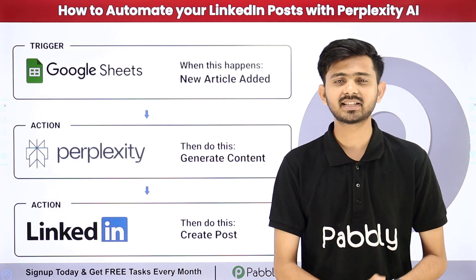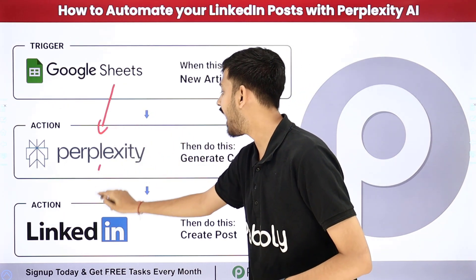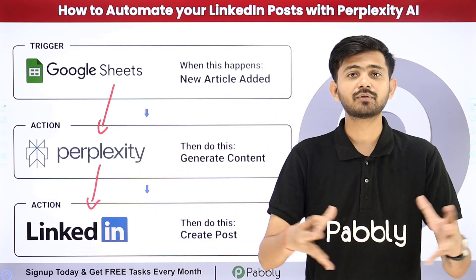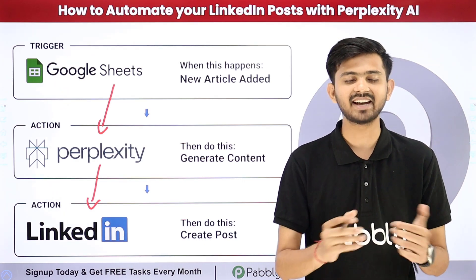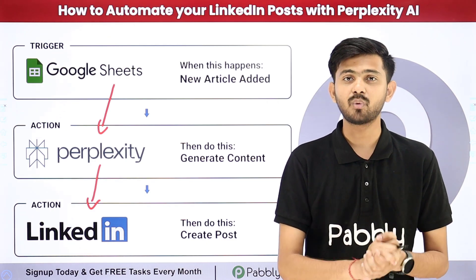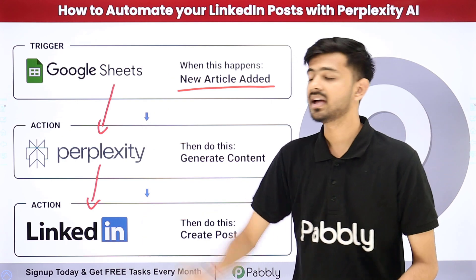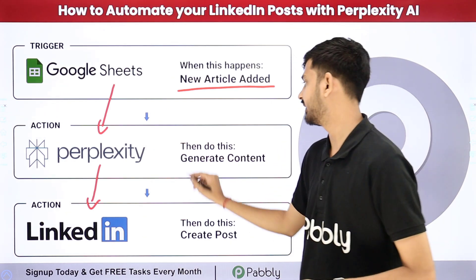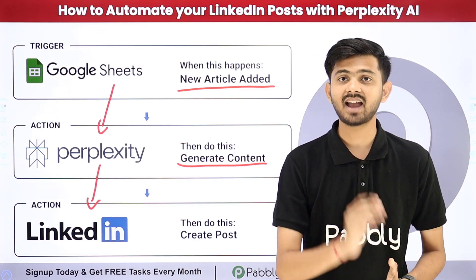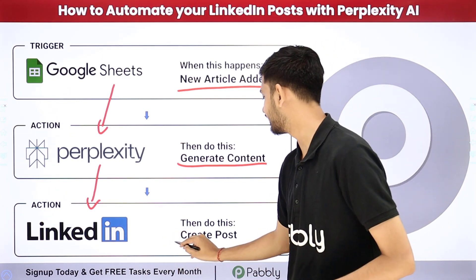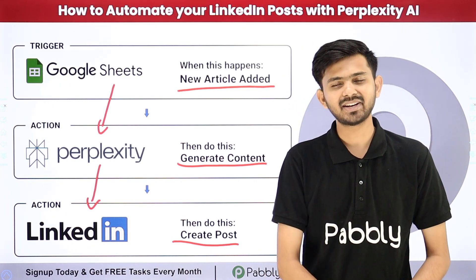For my objective, I need to build a connection between Google Sheets, Perplexity, and LinkedIn. For building this connection I'm going to use Pabbly Connect, which is an amazing software for automation and integration. With Pabbly Connect, as I add a new article in my Google Sheet, Perplexity AI will generate the content for my LinkedIn post, and after generating that content I'll create a new post in my LinkedIn account.